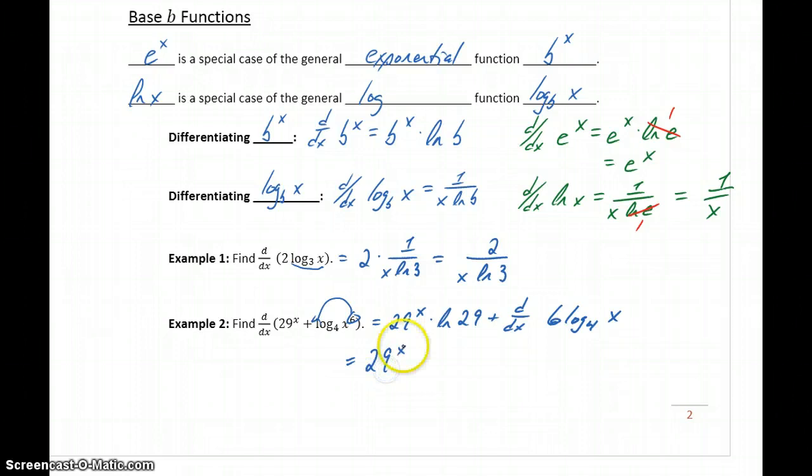will give us 29x times the natural log of 29 plus 6 over x times the natural log of the base, which in this case is 4.